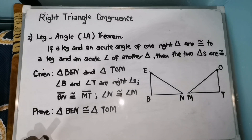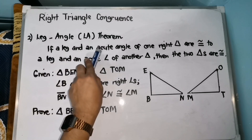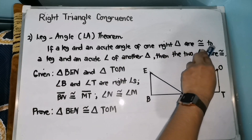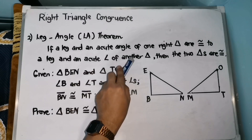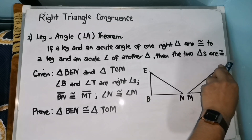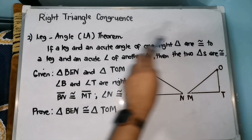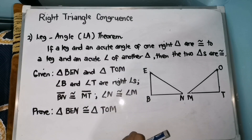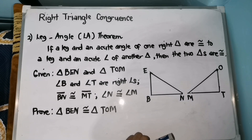The second theorem is the Leg-Angle or LA theorem. It states that if a leg and an acute angle of one right triangle are congruent to a leg and an acute angle of another triangle, then the two triangles are congruent. We are talking about a leg and an acute angle of the two given right triangles that should be congruent.